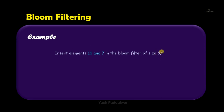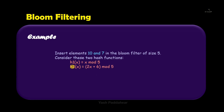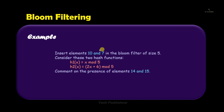Bloom filters are more or less like arrays, and here the size of the array is 5. We are given two hash functions: h1(x) = x mod 5, and h2(x) = (2x + 6) mod 5. Every element to be inserted must first go through these hash functions, and the outputs generated will be used for storing that element in the bloom filter. Once insertion is done, we have to comment on the presence of elements 14 and 15 — they won't be present, but let's see what output we get.